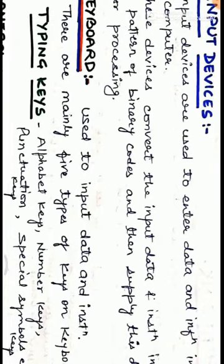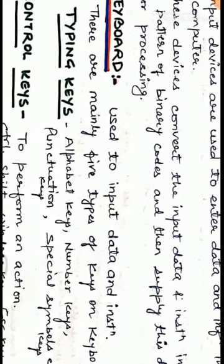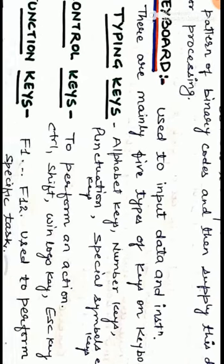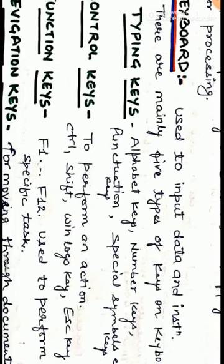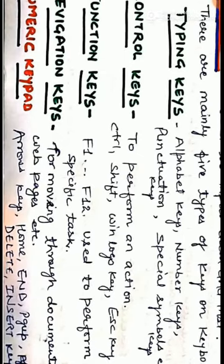The first input device is keyboard. Keyboard is the main input device used to input data and instructions through typing. Keyboards contain many keys used for typing. There are five types of keys on a keyboard. The first one is typing keys. Typing keys contain alphabet keys, number keys, punctuation keys, and special symbol keys. By the help of these keys we are able to type any information or data to be inputted into the computer system.